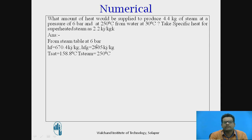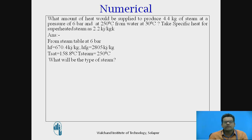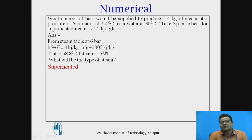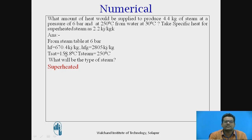From the steam table at 6 bar: HF = 670.4 kJ/kg, HFG = 2805 kJ/kg, and saturation temperature = 158.8°C. The steam output temperature is 250°C. Since the output temperature (250°C) is greater than the saturation temperature (158.8°C) at 6 bar, the quality of the steam is superheated, meaning X = 1.